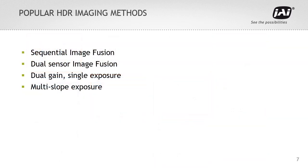There are several techniques which allow us to go beyond the dynamic range of the camera, typically called high dynamic range imaging. There are four popular methods used in machine vision applications: sequential image fusion, dual sensor image fusion, dual gain single exposure, and multi-slope exposure. Let me explain each of these one by one.